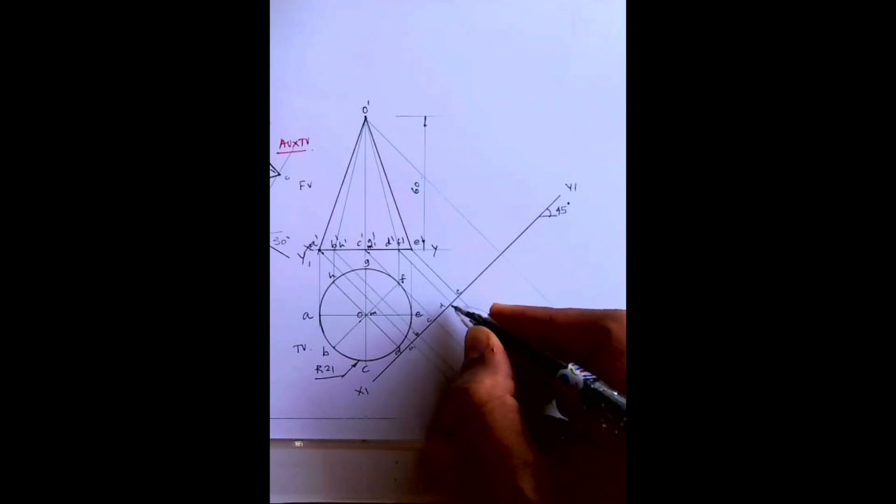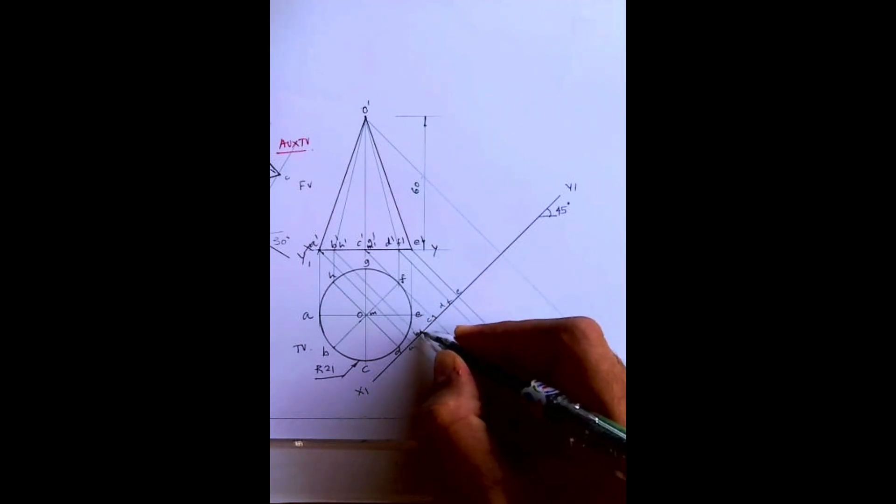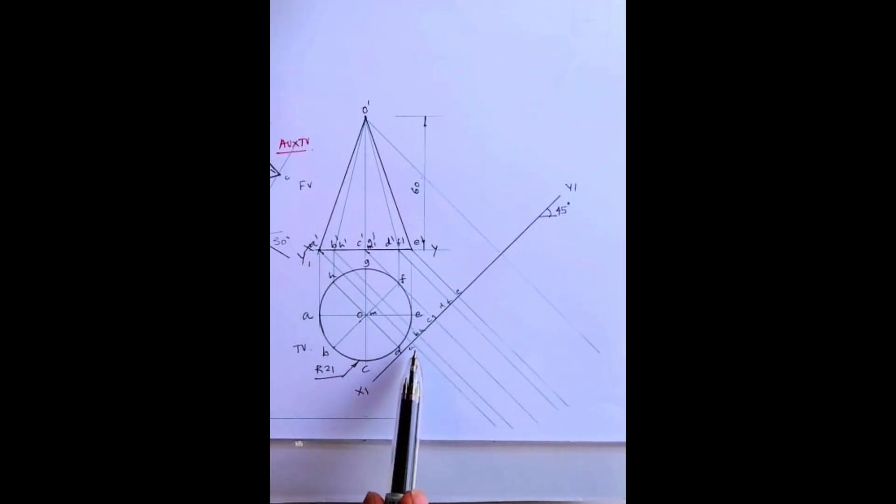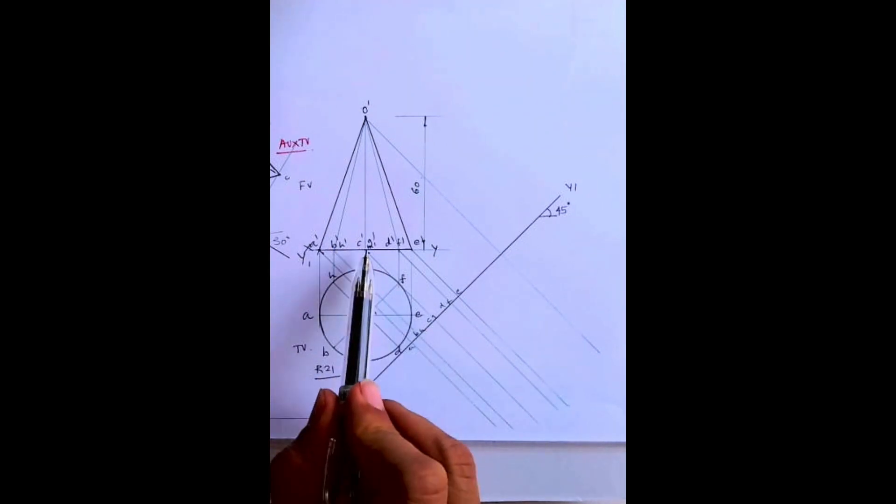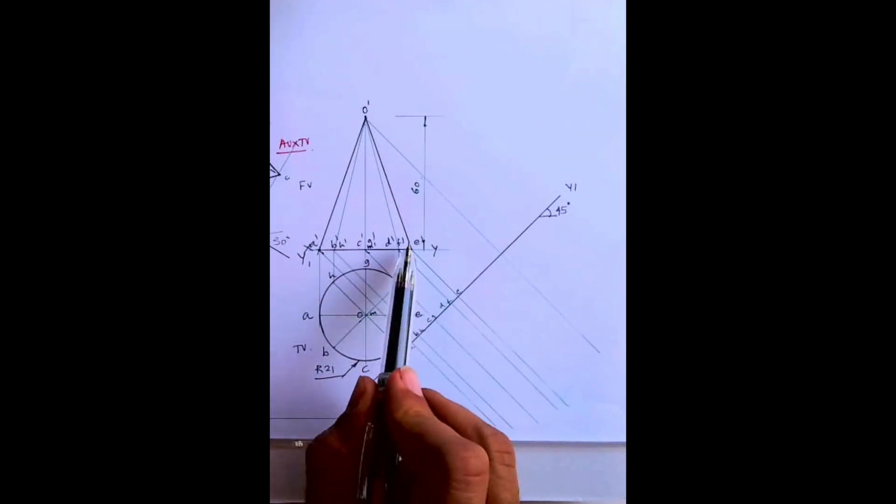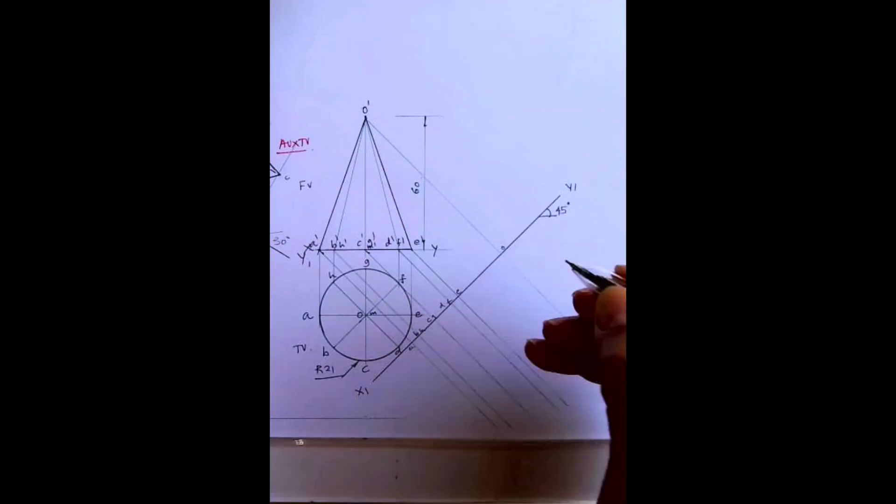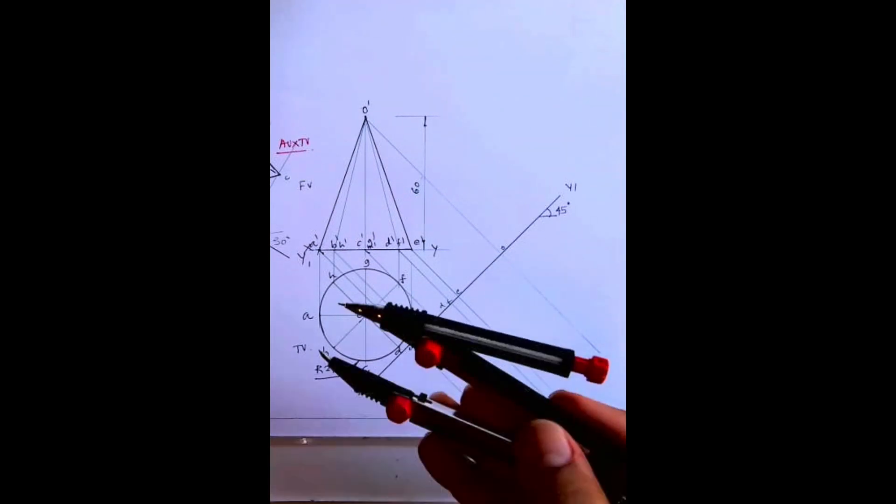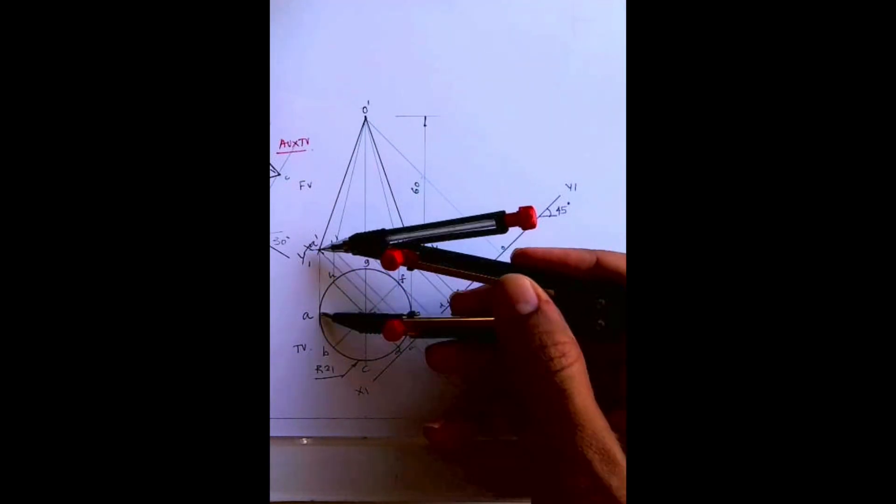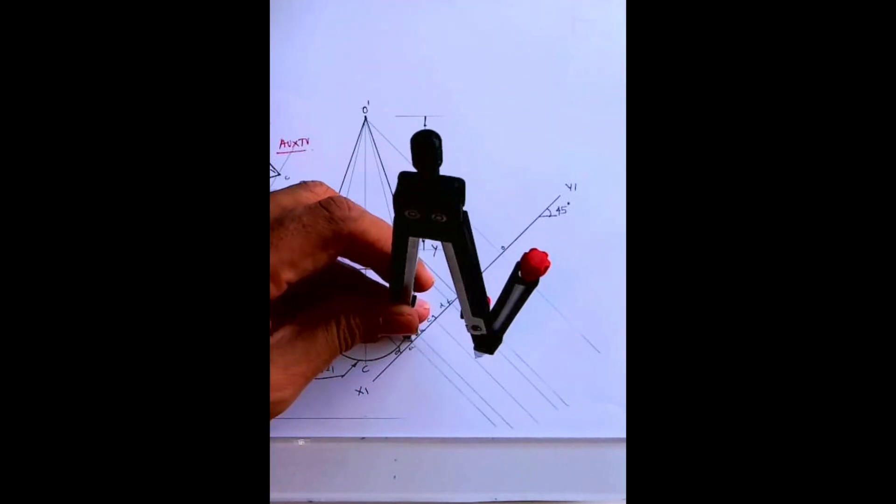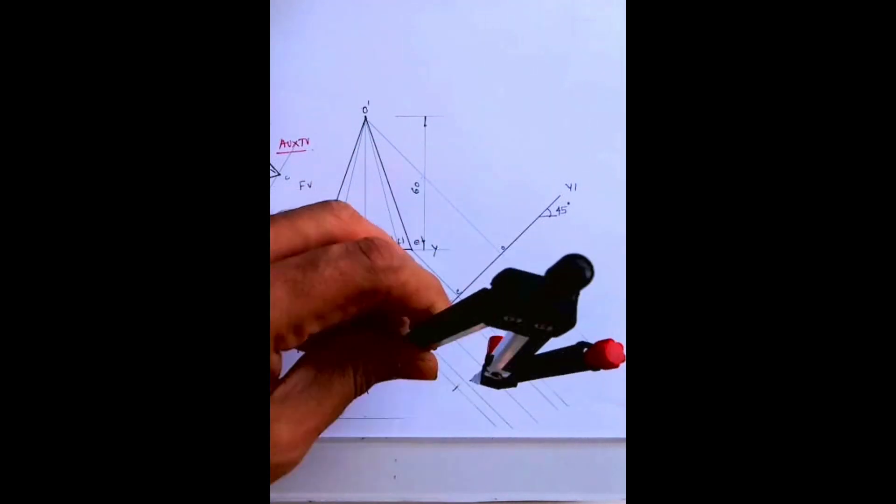After that you draw 45 degree from o dash also. You can write all this: a, b, c, d, e, f, g, h, and o. See, all these points you will write. Now take x y to a, this distance you take, and from x1 y1 you cut it down like this.